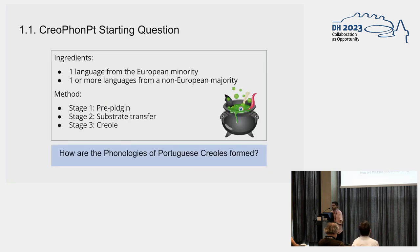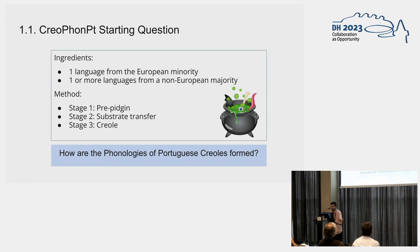For those who are not familiar, creoles are contact languages formed by one European language spoken by a minority, and one or more non-European languages — African, Asian, or American — spoken by the majority of the population of a given community. Creole formation happens through three stages: first, the pre-pidgin, which has just vocabulary items; then the substrate transfer, which gives grammatical substance to the creole; and finally the creole itself.